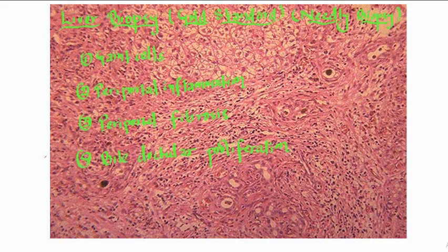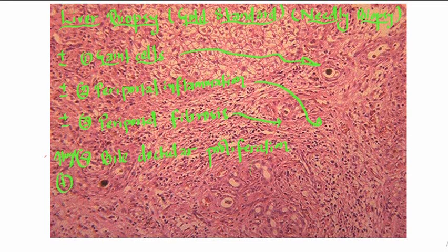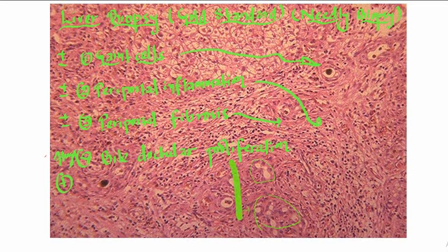Liver biopsy done by needle biopsy is the gold standard. Giant cells, periportal inflammation, and periportal fibrosis may be present or absent, but bile ductular proliferation is always present in liver biopsy of extrahepatic biliary atresia.